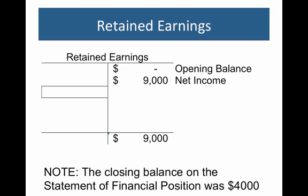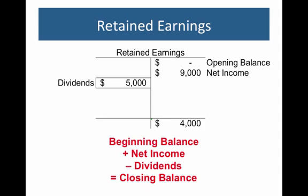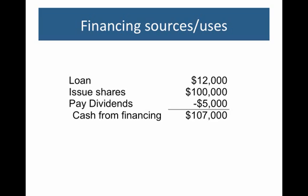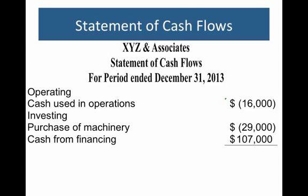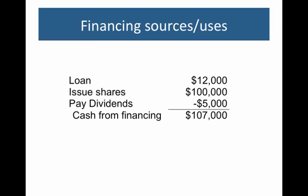The final section is retained earnings. Beginning balance was zero, net income for the year was $9,000. But from our statement of financial position, the actual final value was $4,000 — so something is missing. Something reduced our net income. Using the retained earnings equation — beginning balance plus net income minus dividends equals closing balance — we know the closing balance was $4,000, which tells us we paid $5,000 in dividends, a cash outflow. So our financing sources and uses: a loan of $12,000 was a source of cash, we issued shares for another $100,000, and we paid dividends of $5,000 — giving us net cash from financing of $107,000.